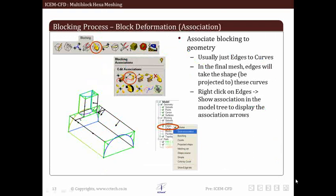Once blocking topology is finalized, the next task is to project block onto geometry to get desired shape. This is what we call association of vertices and edges onto points and curves. The association option is highlighted in the figure shown. To verify projection of associated entities, right click on edges in model tree and enable show association. It will result in association arrows as seen in the figure. The arrow indicates that the curve is going to be projected on respective geometrical entity. We will discuss this option in detail in future slides.